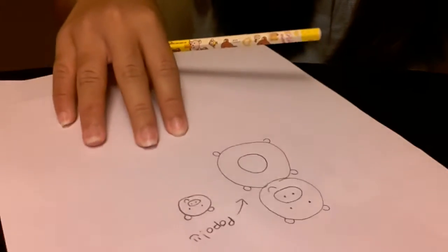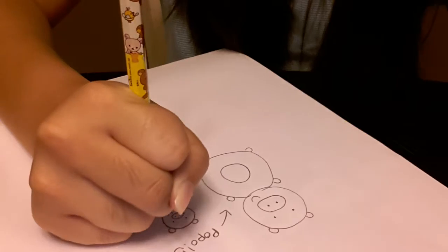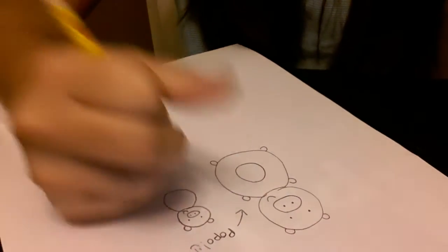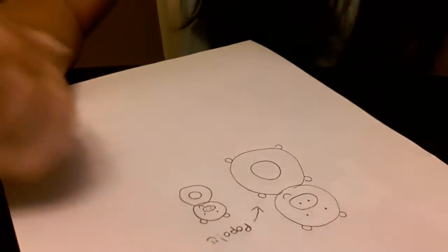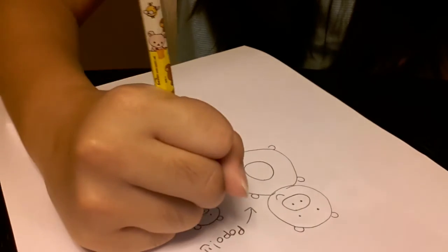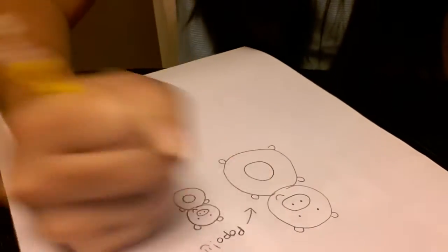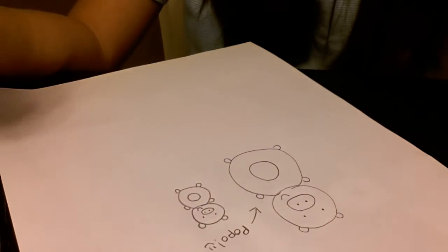And then after that, draw the smiley body. Like that. Another circle in the middle. And do the arms and legs. Like that.